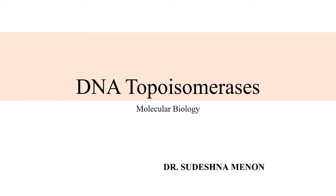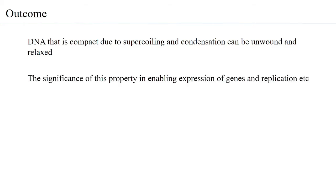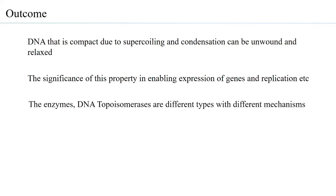This is just an instance of why DNA topoisomerases are relevant to a cell. The outcomes of this session are: you will understand that a very compact supercoiled DNA can be unwound and relaxed. We will understand the significance of this property in enabling expression of genes, replication of DNA, and recombination. The enzymes — DNA topoisomerases — are of different types with slightly different mechanisms. We will also understand that because of the kind of function they have, DNA topoisomerases are targets for several drugs.